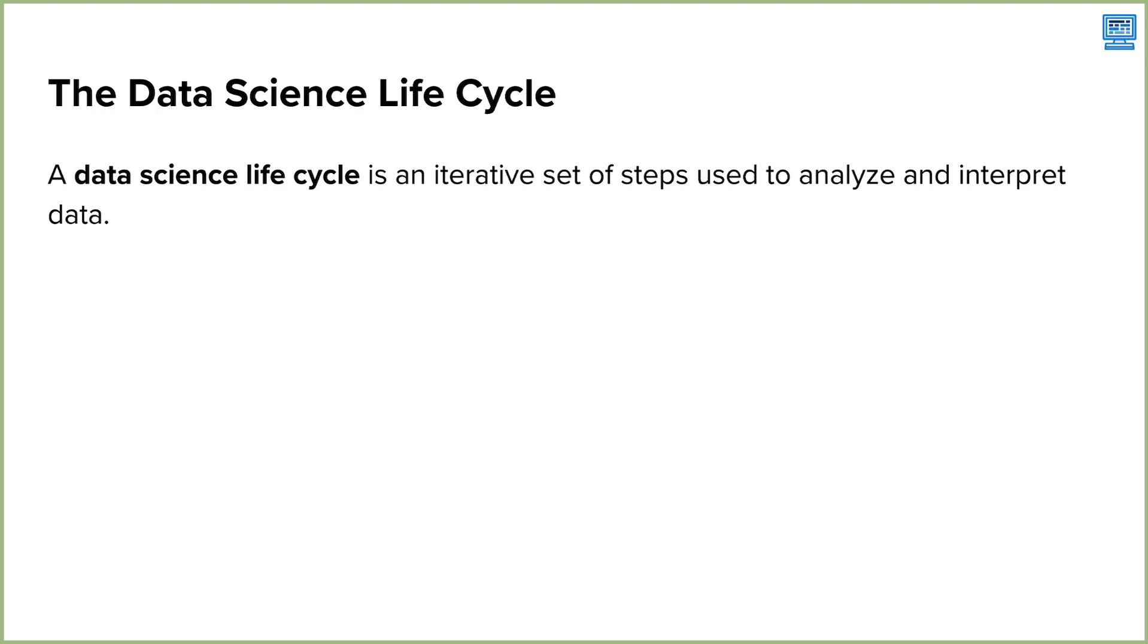The specific steps or the amount of steps that are part of a data science life cycle can vary from team to team or project to project. In this course, our data science life cycle will consist of four different steps. Let's take a look at them.